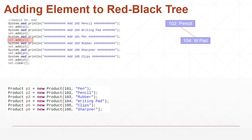Next we add the fourth element p3 (103 Rubber). We compare 103 with 102 Pencil — 103 is higher, so we move right. The right node is already occupied by 104 Writing Pad, so we make one more comparison: 103 versus 104. Since 103 is less than 104, we move towards the left of 104. There is no node to the left of 104, so 103 Rubber occupies that position.